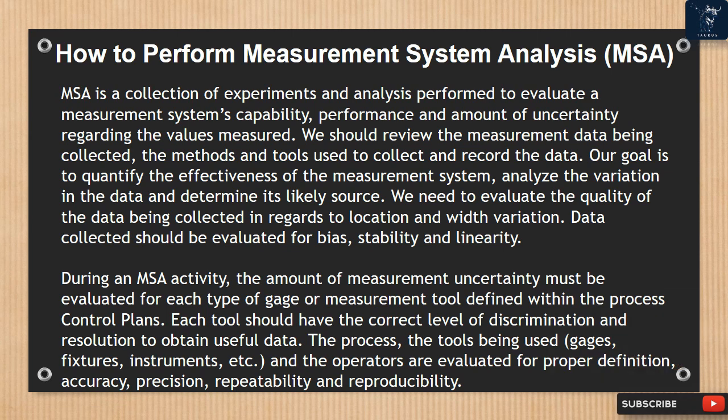During an MSA activity, the amount of measurement uncertainty must be evaluated for each type of gauge or measurement tool defined within the process control plans. Each tool should have the correct level of discrimination and resolution to obtain useful data. The process, the tools being used — gauges, fixtures, instruments, etc. — and the operators are evaluated for proper definition, accuracy, precision, repeatability and reproducibility.